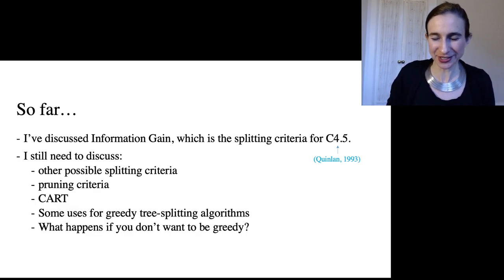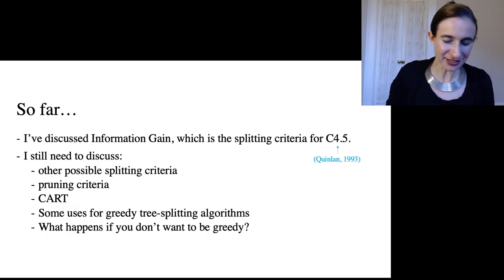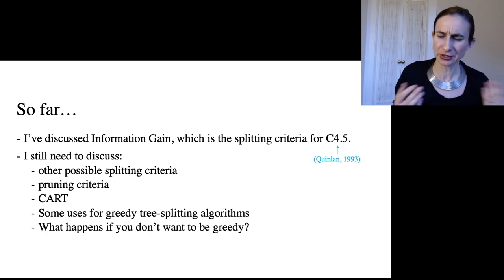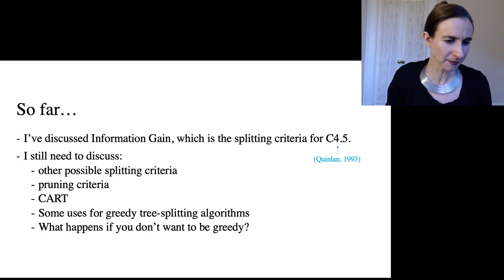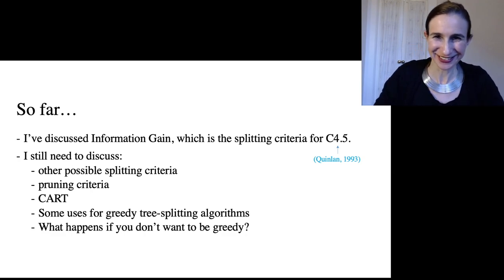Okay, so so far I've discussed one splitting criteria for decision trees which is information gain that's used in C4.5. And I still have a lot of things that I want to discuss with decision trees. I want to discuss other possible splitting criteria, the pruning criteria. I want to talk about what CART does, which is the other algorithm that was in the top 10 in 2008. Also, currently C4.5 and CART are among the most widely used machine learning models in history. I mean these are still very, very well used. And I also want to talk about some uses for these greedy tree splitting algorithms. They're actually very useful in practice for constructing things like forests and boosted decision trees. And then afterward I'll talk about what happens if you don't want to be greedy.